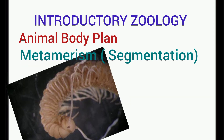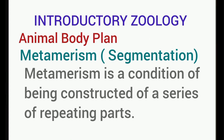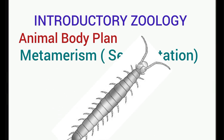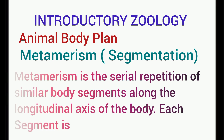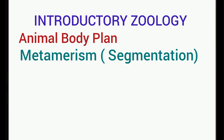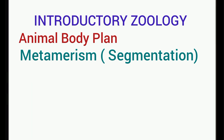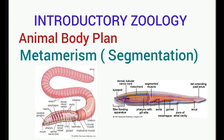Let's talk about metamerism or segmentation. Metamerism is a condition of being constructed of a series of repeating parts. It can also be defined as a serial repetition of similar body segments along the longitudinal axis of the body. Each segment is called the metamer or somite. It should be noted that true segmentation is found in only three phyla: Annelida, Arthropoda, and Chordata, though superficial segmentation is found in many organisms including some advanced ones.